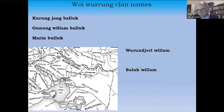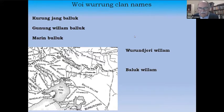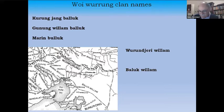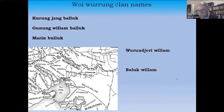The Kulin was composed of six language groups, and one of these was Woiwurrung. Within the Woiwurrung, there were five clans. The clan is the most important level of organisation within the Indigenous world. I should say at the outset that there is no meaningful distinction that can be made in traditional Aboriginal society between people and their country. They are, in fact, indivisible.